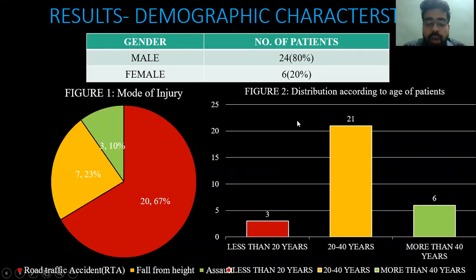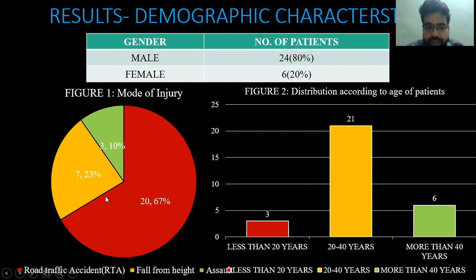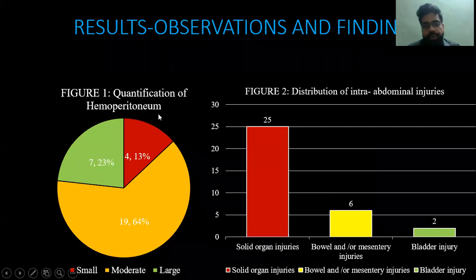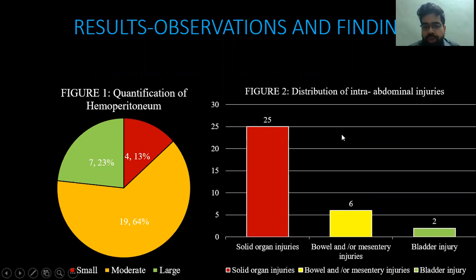Regarding results: 80% of patients presenting in the trauma setting were male and 20% were female. The most common mode of injury was road traffic accidents, accounting for 70% of all patients. In the distribution of patients, the maximum number belonged to the 20 to 40 years age group, representing the working class, totaling 21 patients. When quantifying hemoperitoneum, the maximum number of patients presented with moderate hemoperitoneum. Distributing according to abdominal organ injuries, 25 presented with solid organ injuries, 6 with bowel and mesenteric injuries, and 2 with bladder injuries.